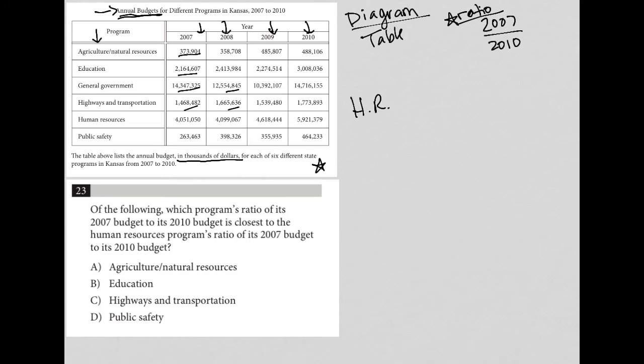So ratio for human resources for 07 to 010. Use a different color. So 2007, I have this number. For 2010, I have this number. So if I just go straight to my calculator now to figure out what that ratio is, I can divide 4051050 divided by 5921379. And I'm going to get 0.684. So that's the human resources ratio.